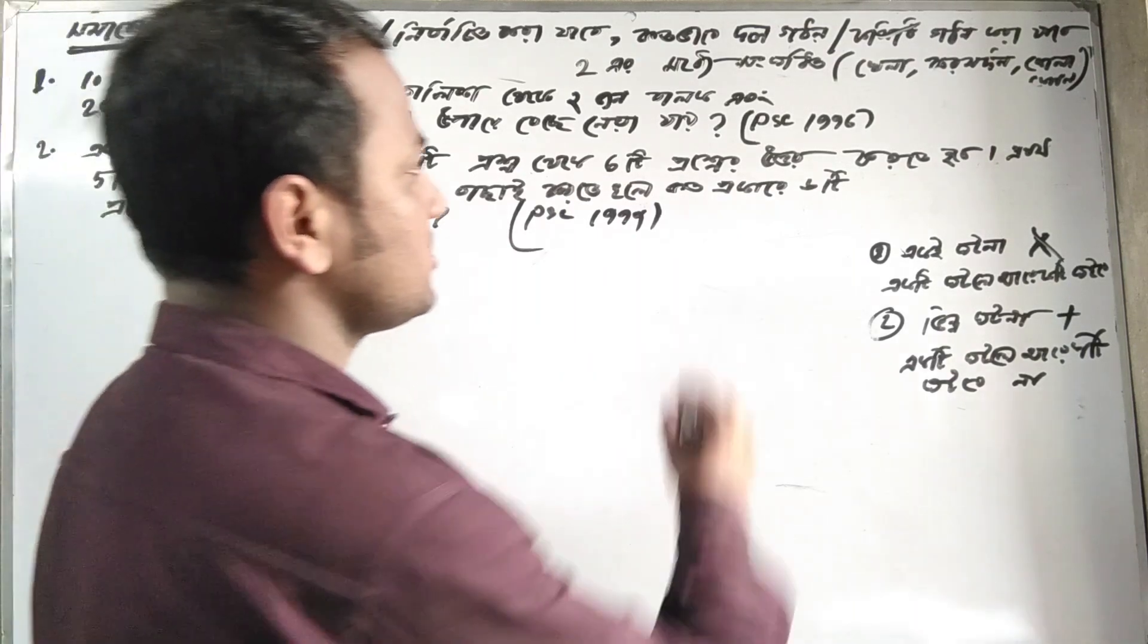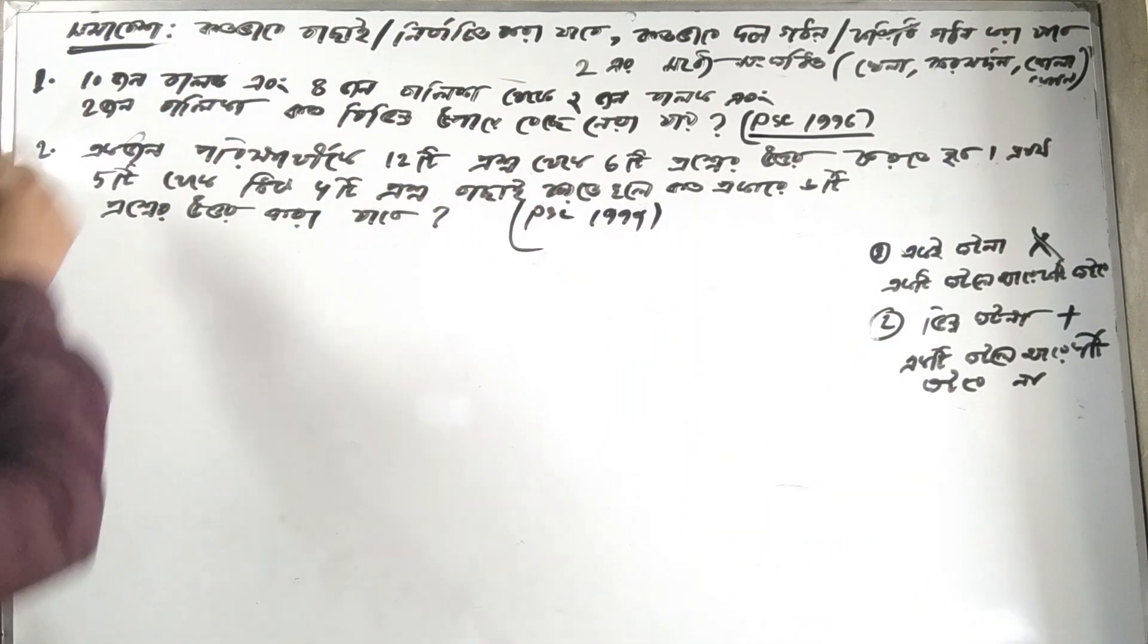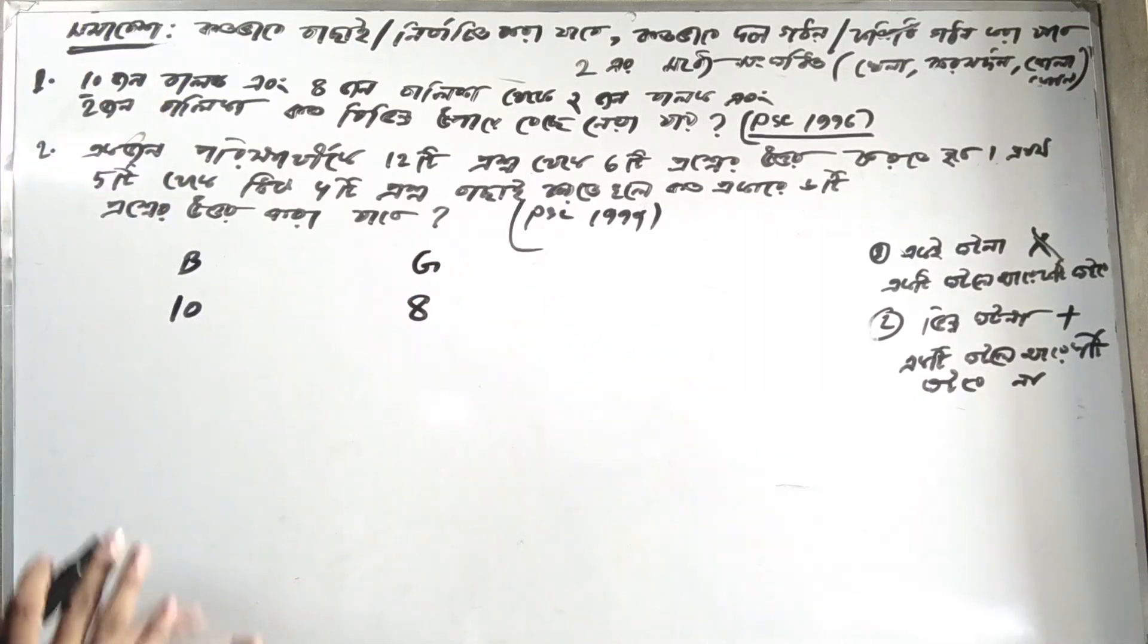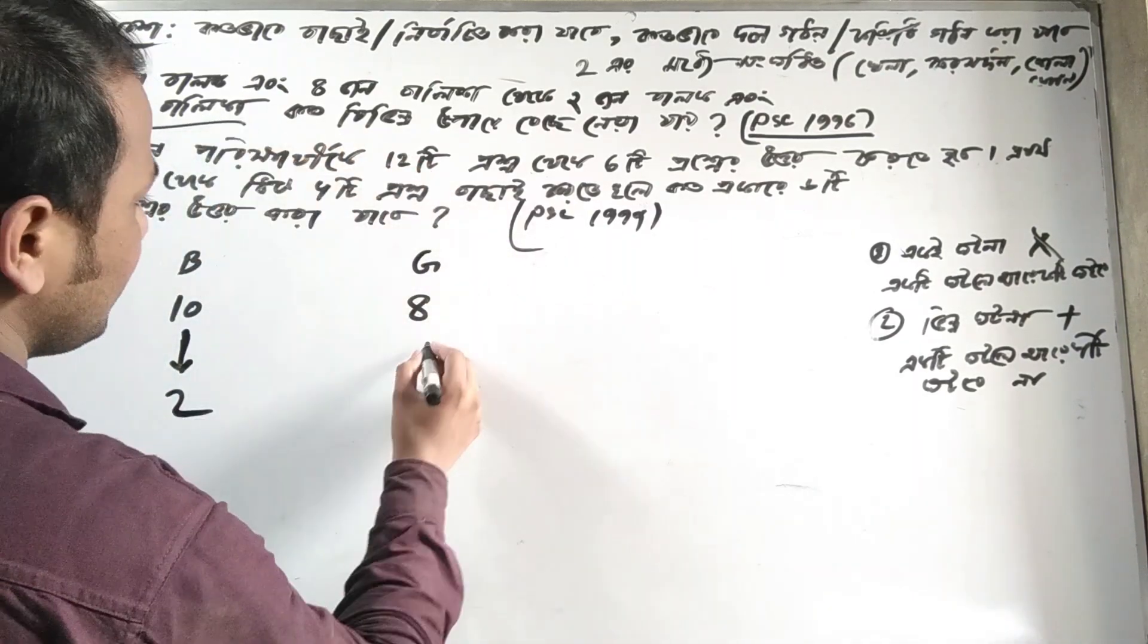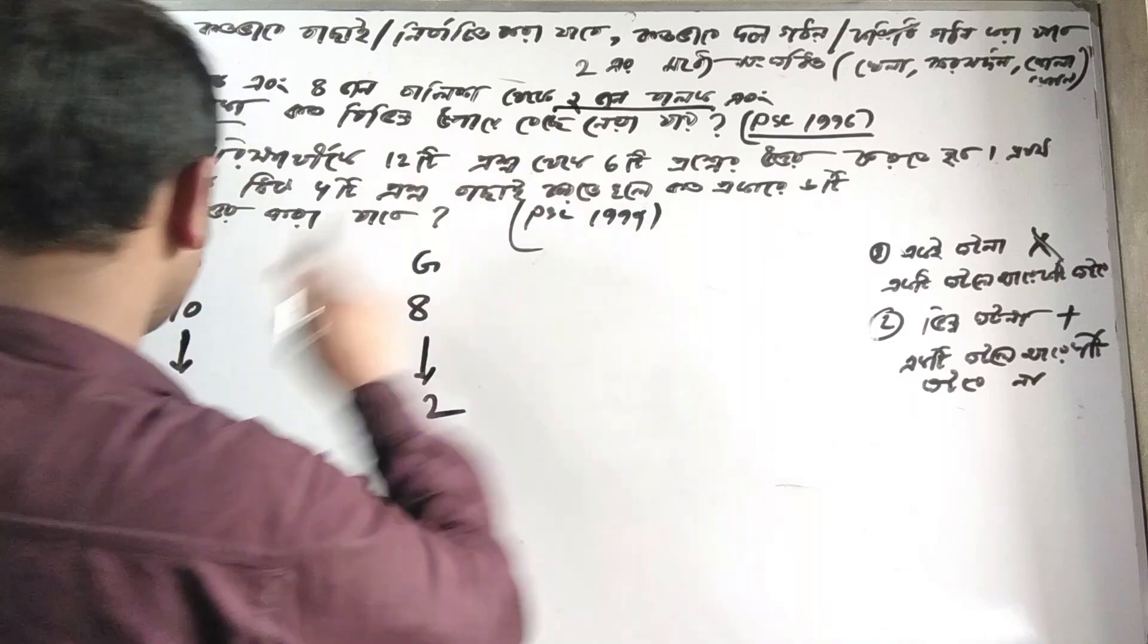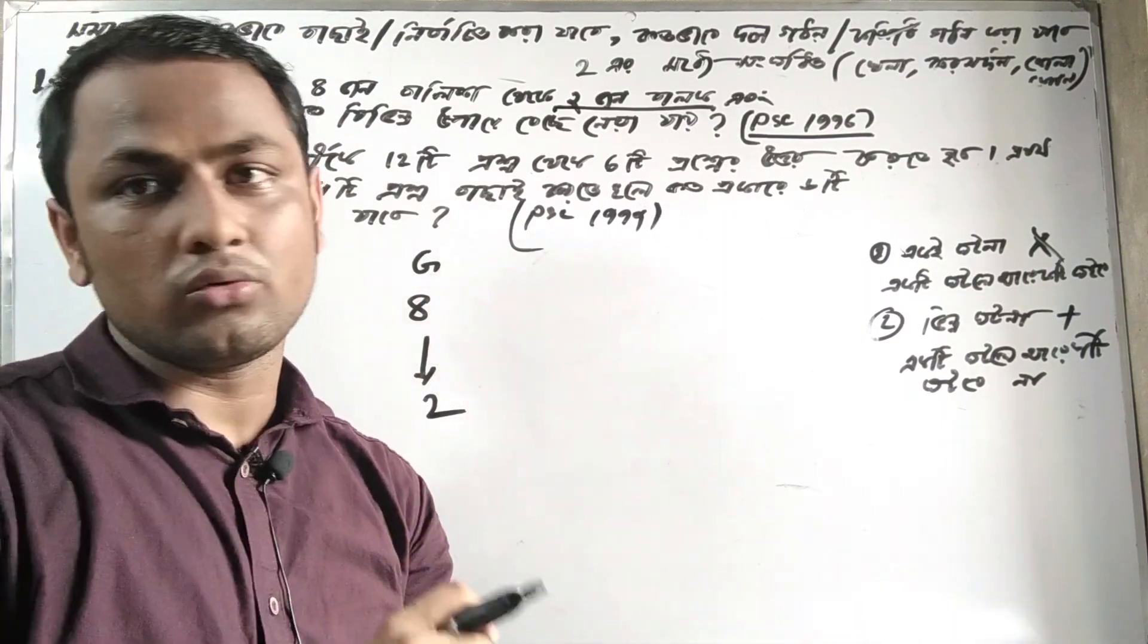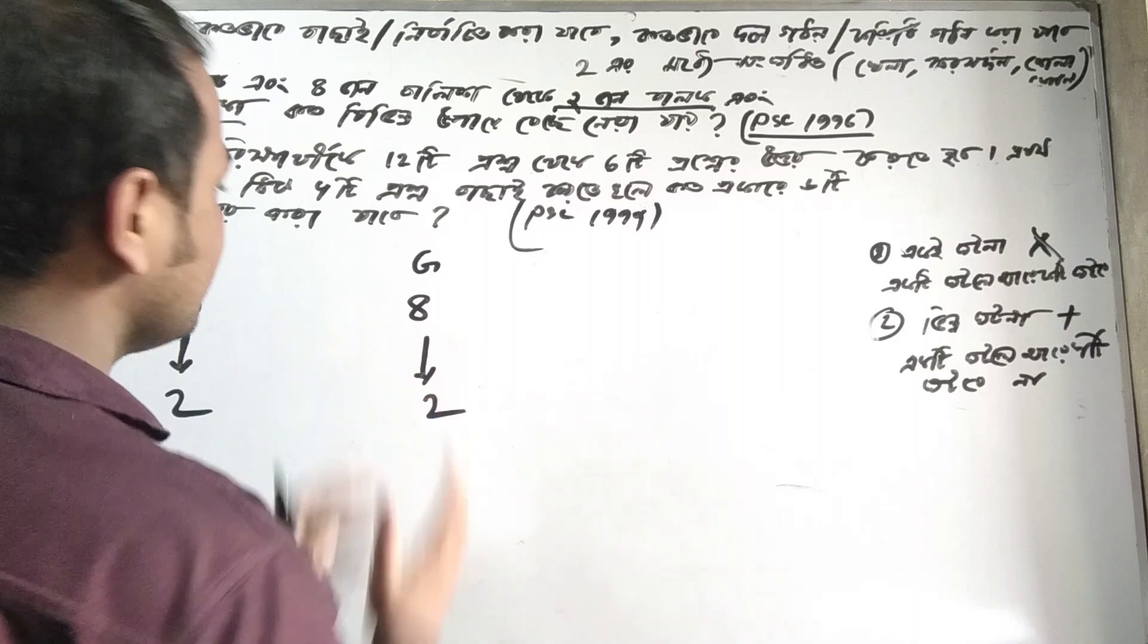This is similar to a PSC 1996 problem. When we have two groups of people, we can apply combination formulas. The question is: given two groups of people, how many different selections can we make? This involves understanding the active members in each group.